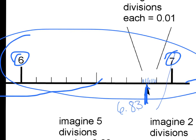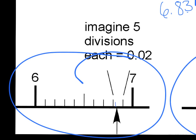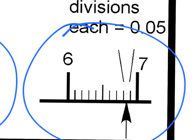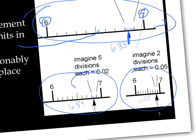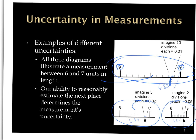Looking at the second ruler, we can't really make 10 marks in between, so our estimation is about 6.84. The third is even less precise — we can only tell if it's in the middle or on each side, so I'd say 6.85. Even though they all mark the same point, the first measurement is much more precise and the uncertainty is much lower.